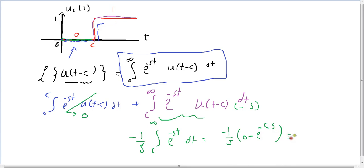0 minus e to minus sc over s, which equals e to the power of minus cs over s. So the unit step, we use integration by parts. We divide it into two parts from 0 to c, and we put this term as 0 because from the function right there it's 0.